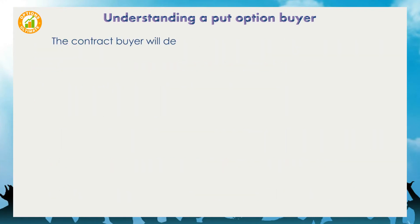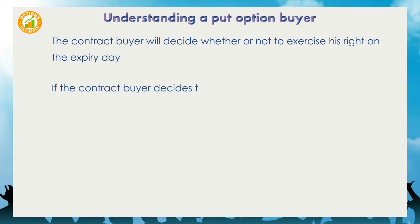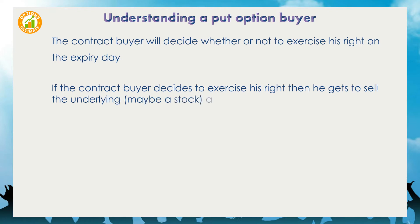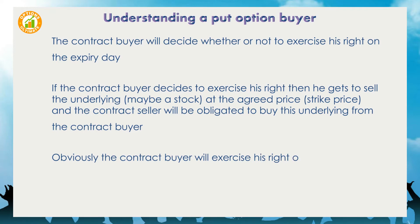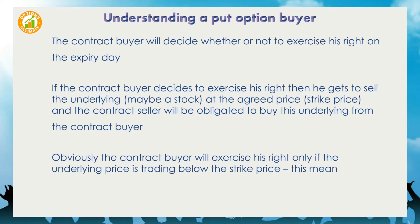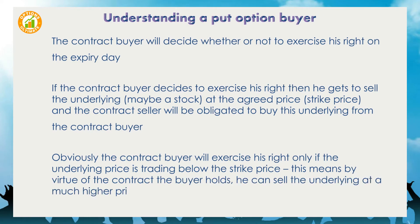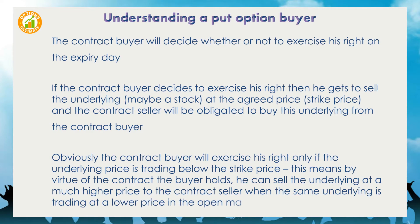The contract buyer will decide whether or not to exercise his right on the expiry day. If the contract buyer decides to exercise his right, then he gets to sell the underlying — maybe a stock — at the agreed strike price, and the contract seller will be obligated to buy this underlying from the contract buyer. Obviously the contract buyer will exercise his right only if the underlying price is trading below the strike price, meaning he can sell the underlying at a much higher price to the contract seller when the same underlying is trading at a lower price in the open market.